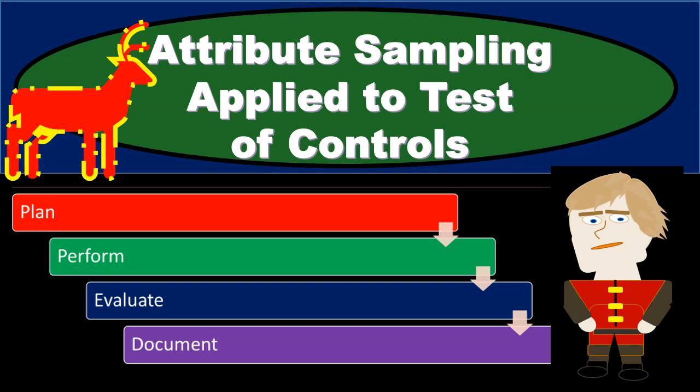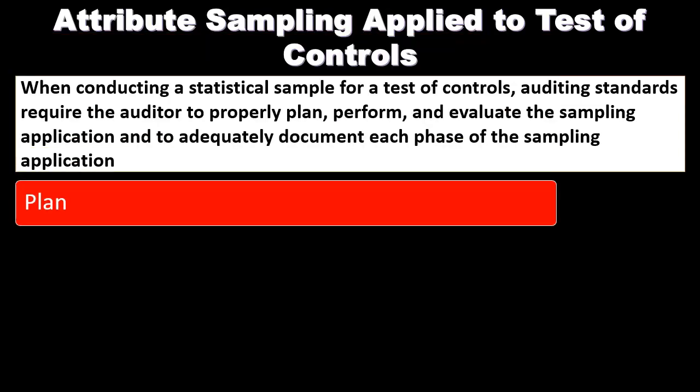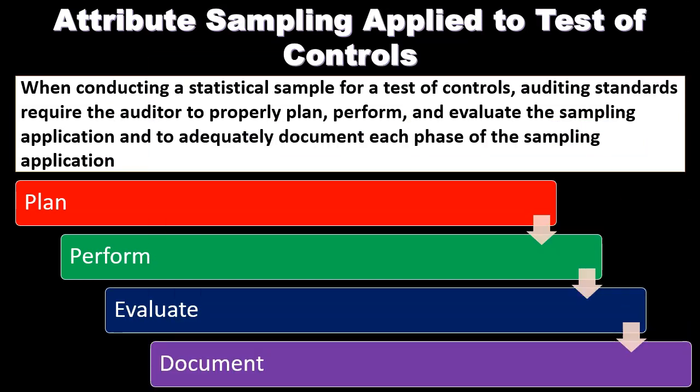In this presentation, we will take a look at Attribute Sampling Applied to Tests of Controls. When conducting a statistical sample for a test of controls, auditing standards require the auditor to properly plan, perform, and evaluate the sampling application, and to adequately document each phase. Those phases include planning, performance, evaluation, and documentation. We're going to go through each of these phases, starting with the planning phase.